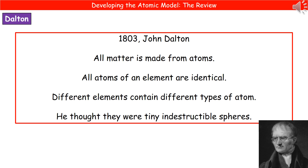Our first scientist is John Dalton. Back in 1803, he came up with the idea that all matter is made from atoms, and he also adapted that further by saying that all atoms of an element are identical to each other — so all atoms in gold would be identical — but different elements contain different types of atom. The atoms that make up silver would be different to those that make up gold. He thought of atoms as tiny indestructible spheres, as he had no idea what they really looked like.